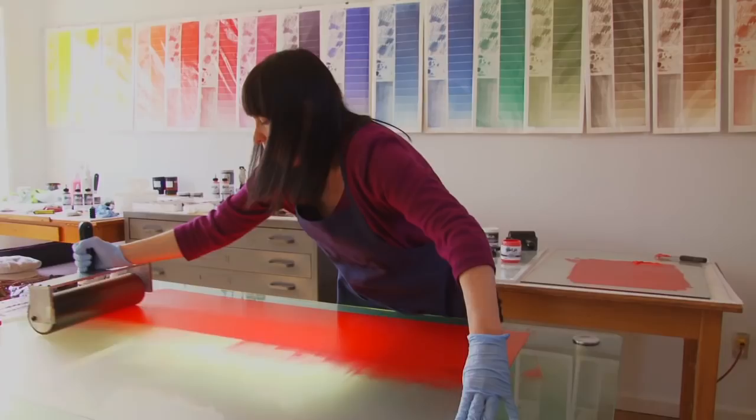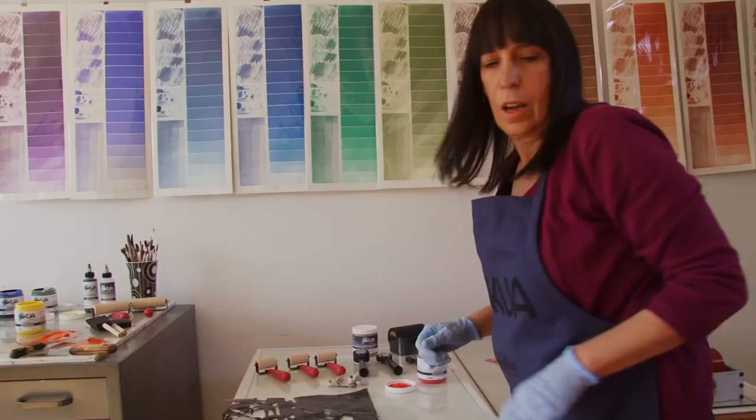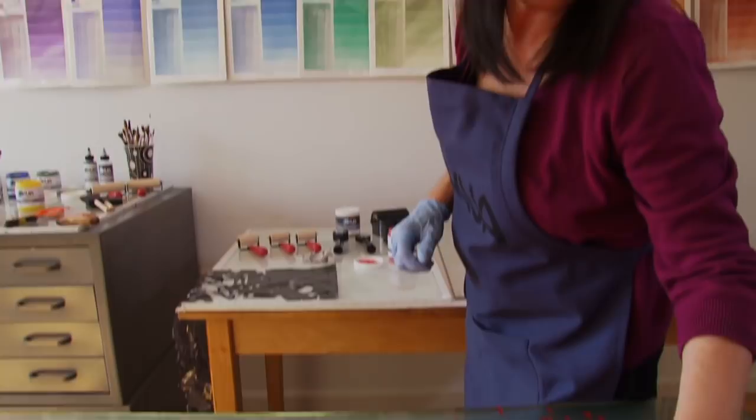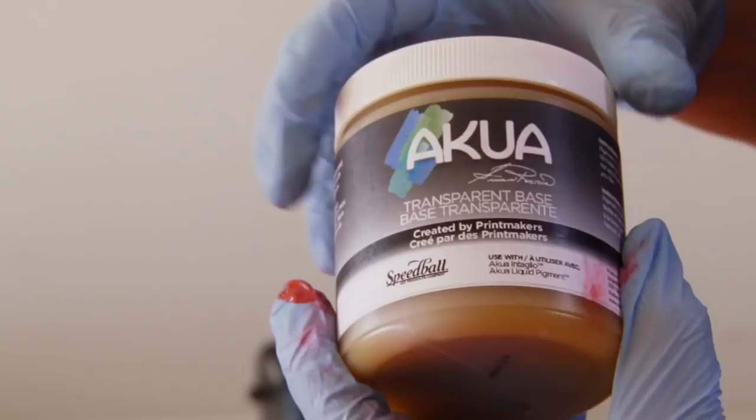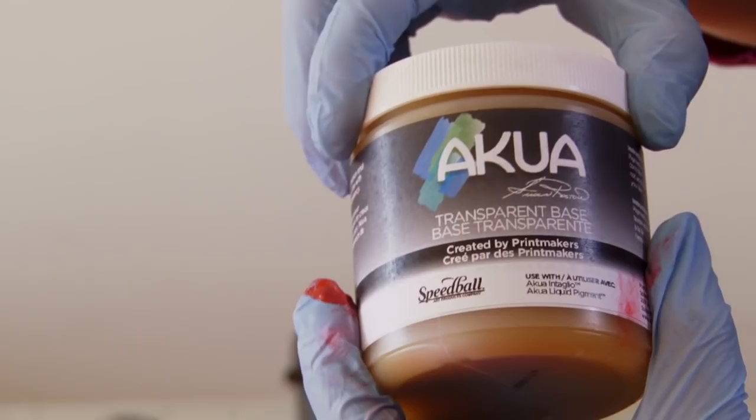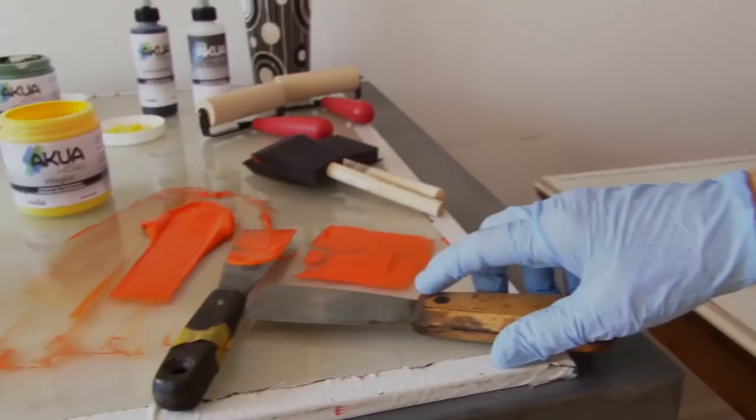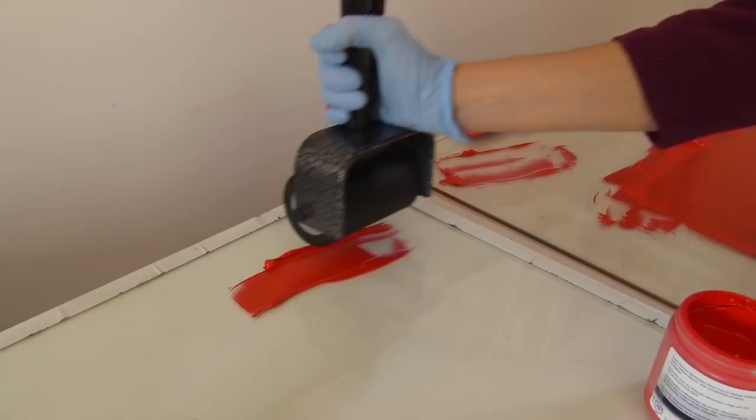I'm going to add a little transparent base so that I can get this a little lighter in tone. Transparent base is basically Akua Intaglio ink without any pigment. So if you add transparent base to the ink, you'll knock down the intensity of the color.